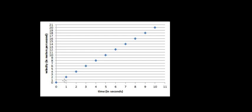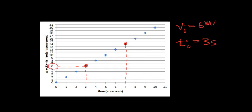Now I'm going to take the same graph and choose two different points. I'll choose this point, which occurs after the object has been speeding up for three seconds, and this point, which occurs after a total time of seven seconds. My initial velocity at t equals 3 seconds works out to be 6 meters per second, and my final velocity at t equals 7 seconds works out to be 14 meters per second.